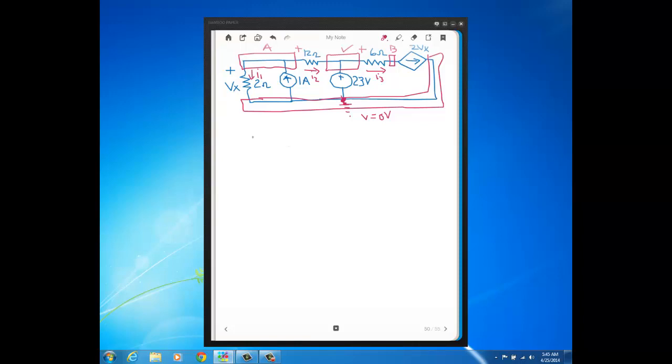So now KCL at A will just be that we've got 1 amp flowing in and we've got I1 plus I2 flowing out.